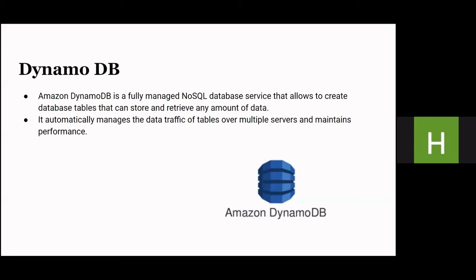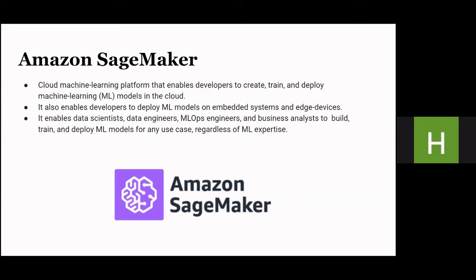The first term is DynamoDB — it is a database manager that can manage a large amount of data traffic over tables from multiple servers and can provide good performance. The second is Amazon SageMaker, a platform that provides cloud machine learning where ML models can be deployed on embedded systems and even edge devices. Regardless of ML expertise, one can easily deploy ML models over SageMaker.